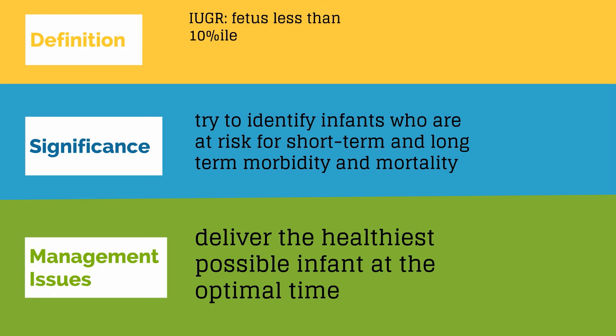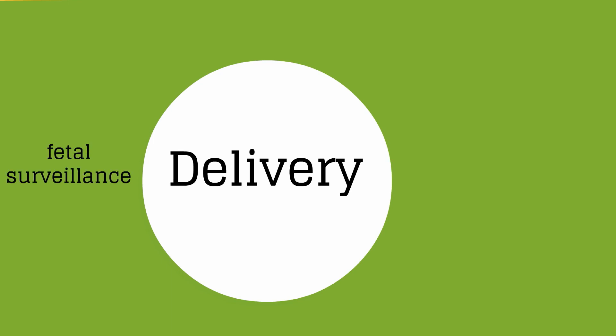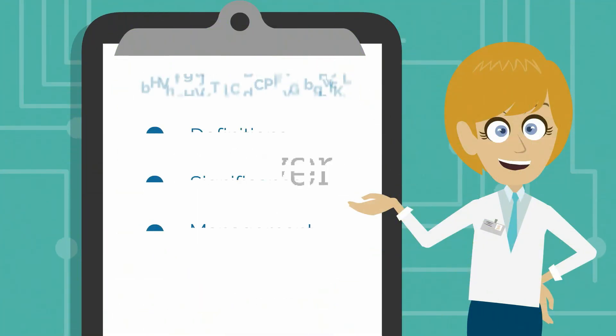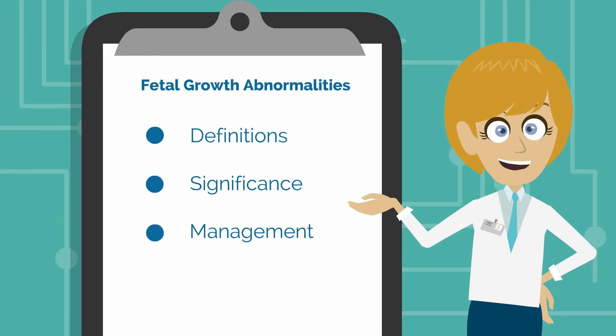Moving to management, the goal is to deliver the healthiest possible infant at the optimal time. Fetal surveillance is important, with continued management of the pregnancy based on the results of fetal testing. The gestational age of the fetus and the known risks associated with prematurity all need to be factored into decisions regarding timing of delivery. Delivery should optimally be performed when the risk of fetal death is greater than the risk of neonatal death. This concludes the APCO video on fetal growth abnormalities, having discussed the definitions, significance, and management of fetal macrosomia and IUGR.